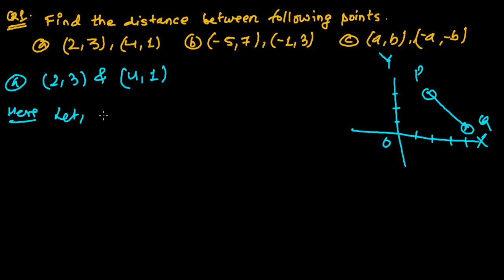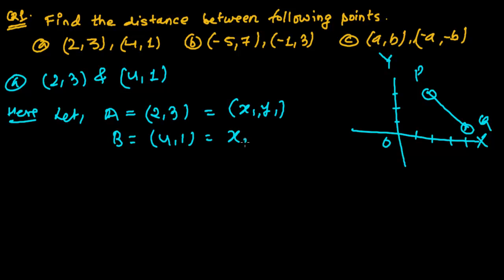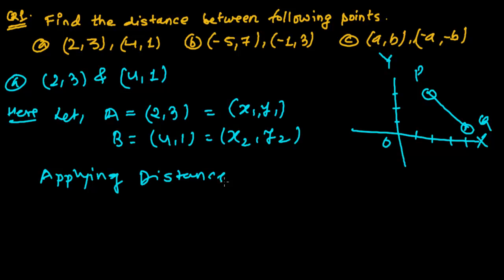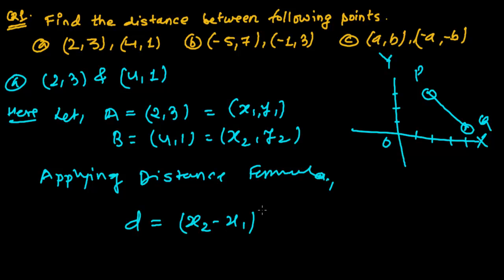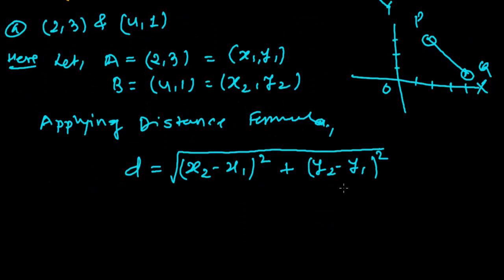Let point A equal (2, 3) as x1 and y1, and point B equal (4, 1) as x2 and y2. Applying the distance formula: D equals root over (x2 minus x1) whole square plus (y2 minus y1) whole square. Now just apply this.